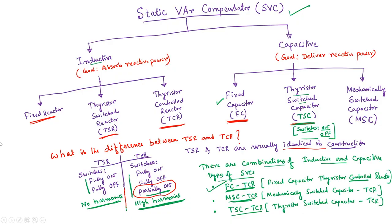Welcome again to my course Power Electronics Application in Power System. This is another lecture. In the last lecture I discussed different types of static var compensator, and I said that there are two types: one which absorbs reactive power, and another which can deliver or produce reactive power.